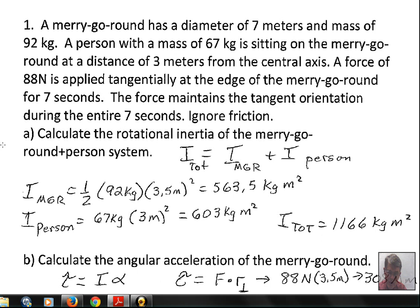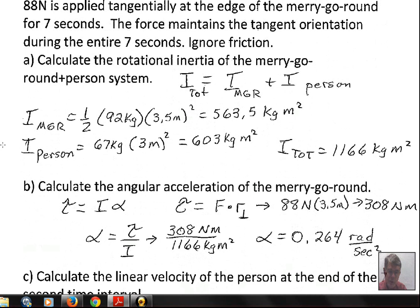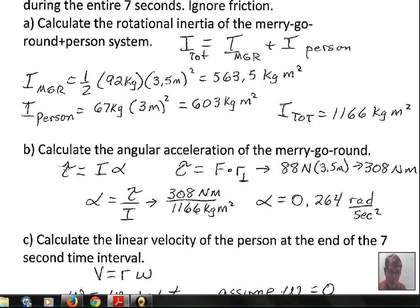What is the angular acceleration of the merry-go-round? The force applied tangentially supplies a torque. We've calculated the rotational inertia. Alpha is our unknown—the angular acceleration. To calculate alpha, we need to do a side calculation of the torque. Torque is force times lever arm: 88 N times 3.5 m gives 308 N·m of torque.